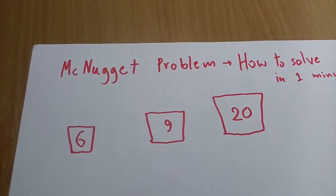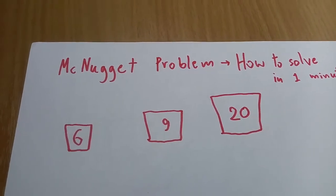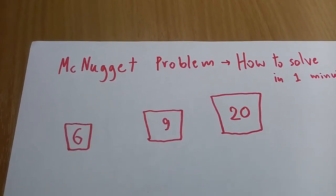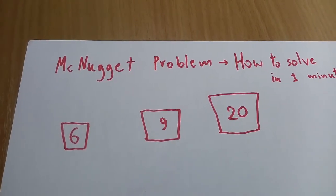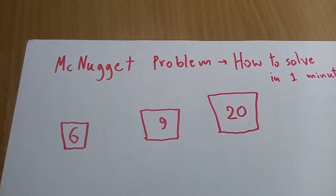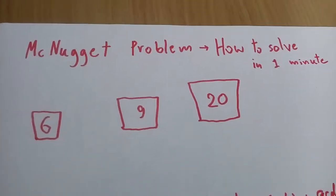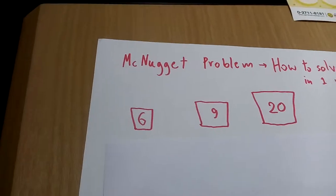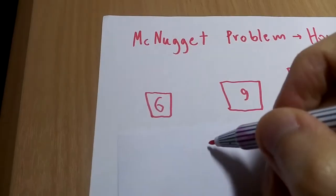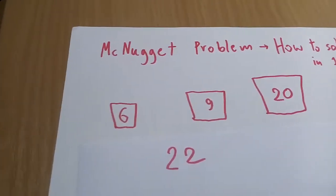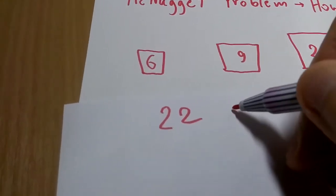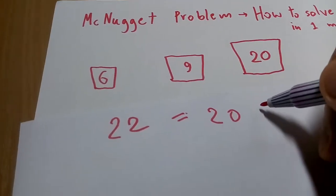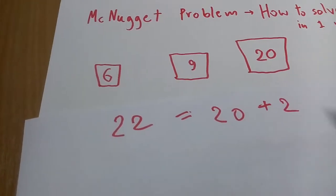The point is, what is the largest number that when you order the nuggets, the seller can't possibly give you in the combination of these boxes? Let's take for example if you order 22 nuggets. If you take 20 out in the big box, you have two more left.